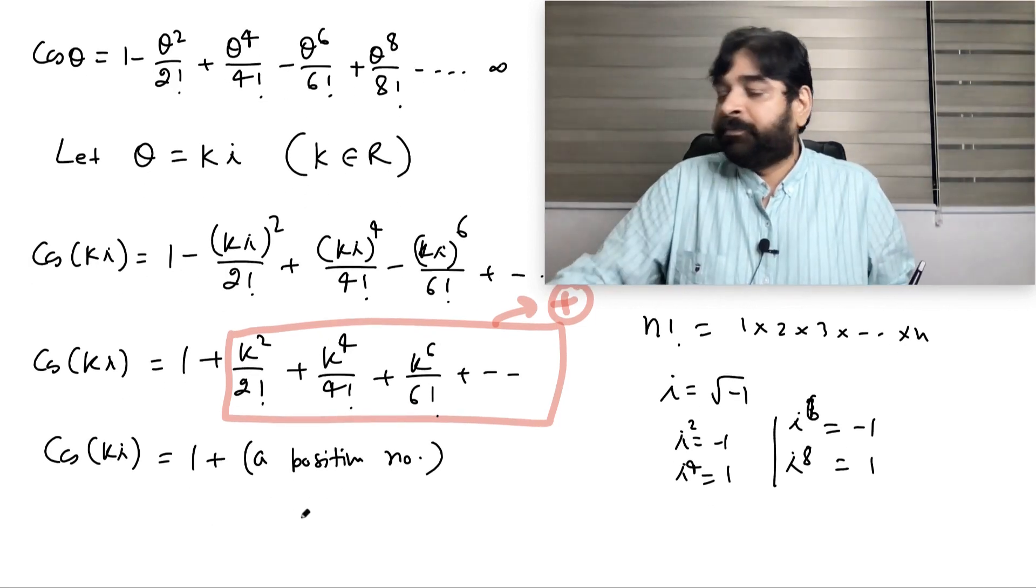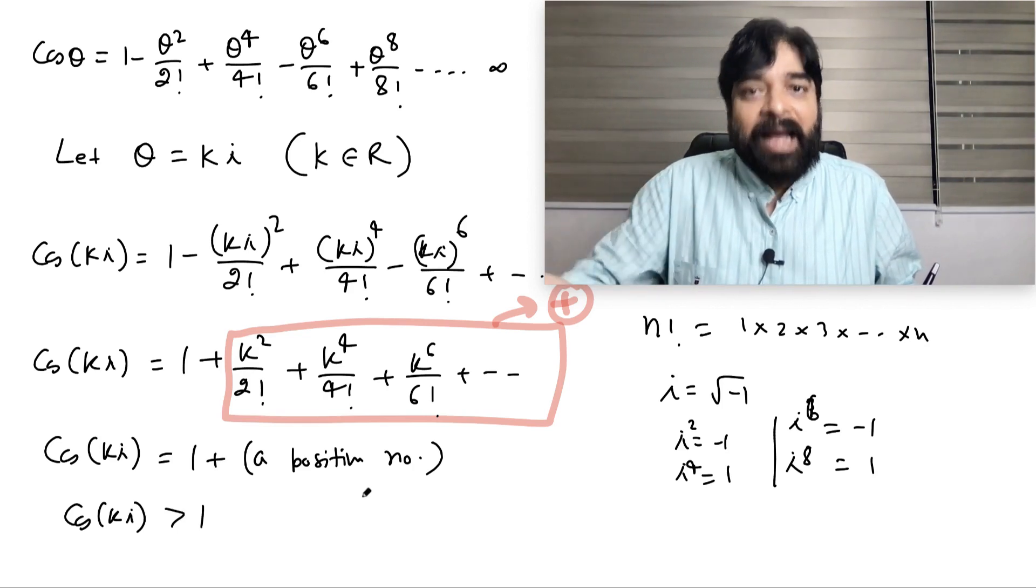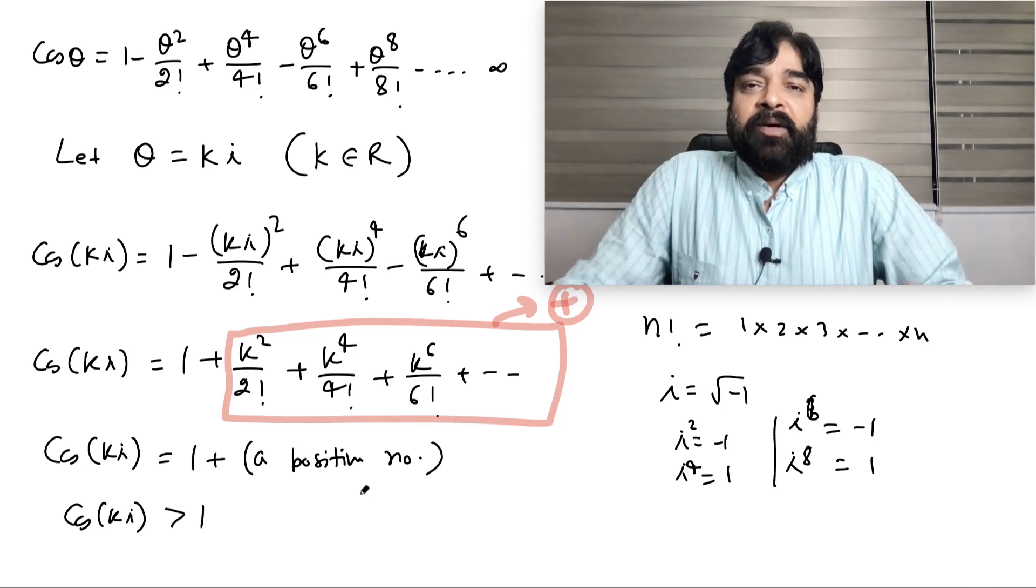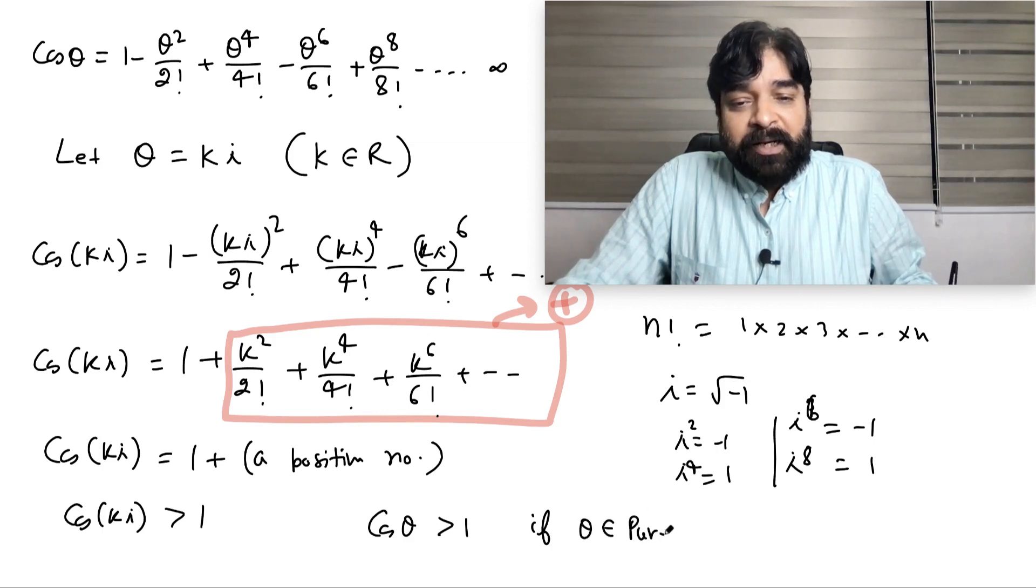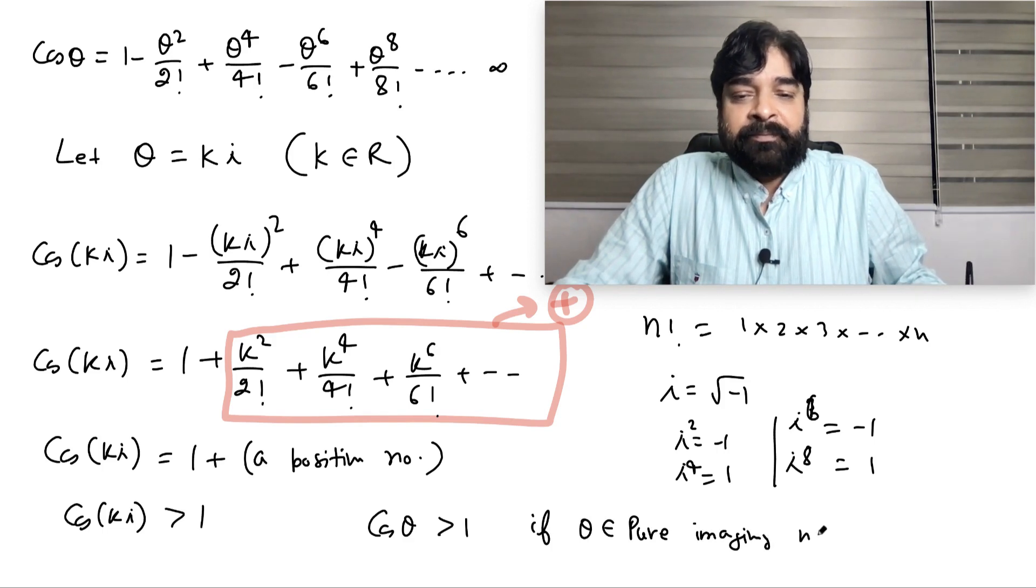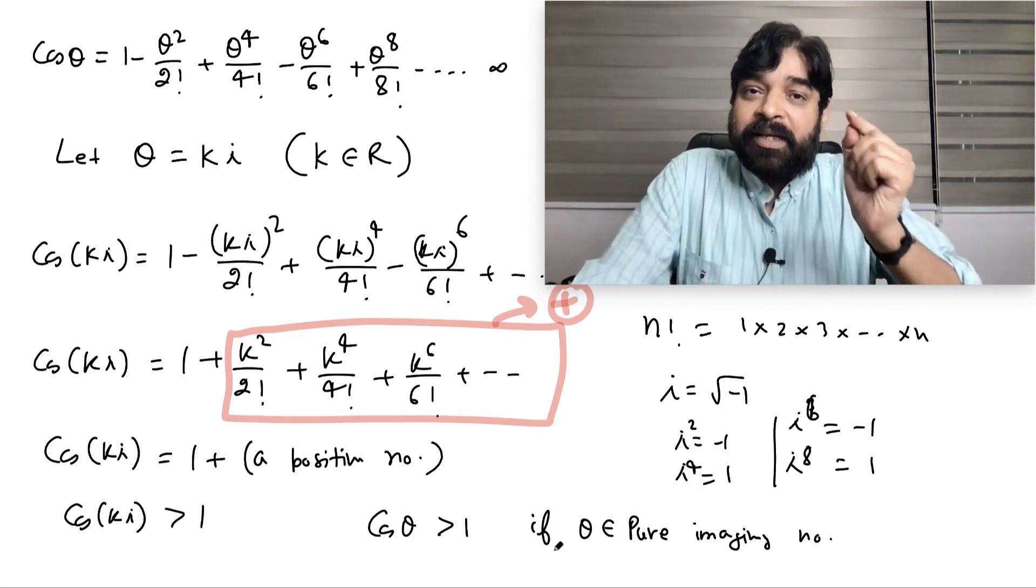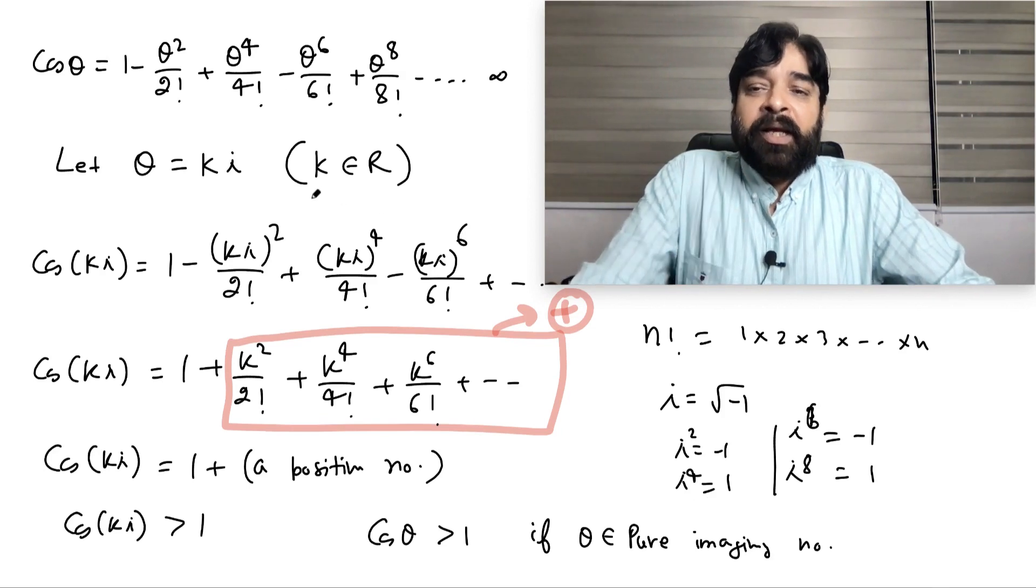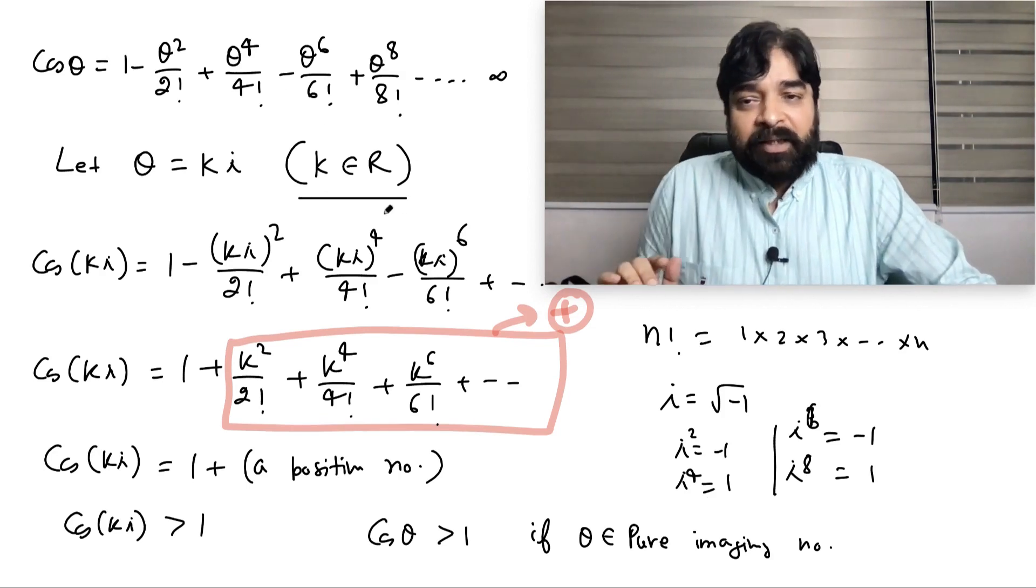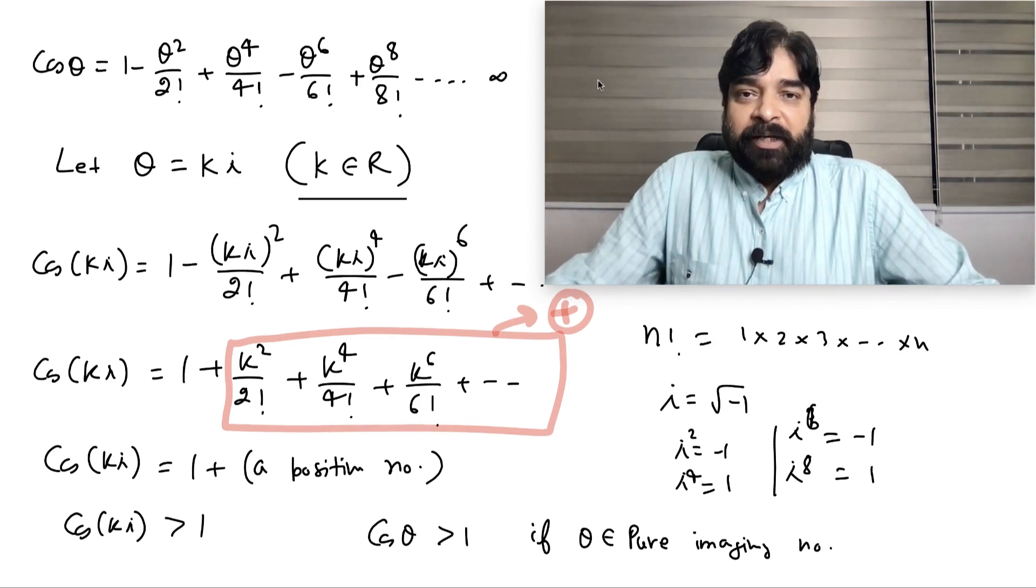Understood my point? 1 plus positive number will always be bigger than 1. It will always be bigger than 1, am I right? So cos(ki) I can say is bigger than 1. Remember, cos θ can be greater than 1. There is no doubt about it. Cos θ can be greater than 1 if θ belongs to pure imaginary number. So now onwards, whenever you are coming to confusion about what cos θ is, remember: cos θ is always less than or equal to 1 with the condition θ should be real. If θ is not real, it's pure imaginary, cos θ will be greater than 1. I hope it's clear. The purpose of making this video is to make you understand one thing: the condition which is given everywhere along with the formula, that condition plays a very important role and you should always consider that. I hope it's clear to everybody. Thank you very much.